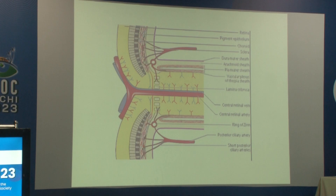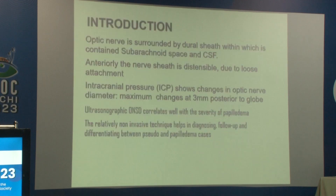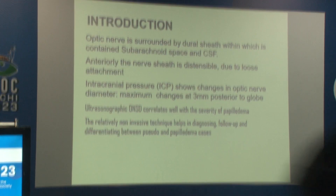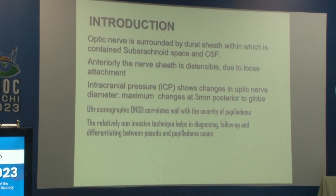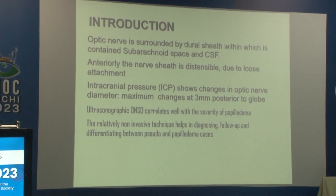The optic nerve is surrounded by a dural sheath which is continuous with the meninges of the brain. A rise in intracranial pressure is reflected around the optic nerve sheath, causing swelling and increase in diameter. Anteriorly, the optic nerve sheath is distensible, so ICP changes are shown in the optic nerve diameter, with maximum changes occurring 3 mm posterior to the globe.